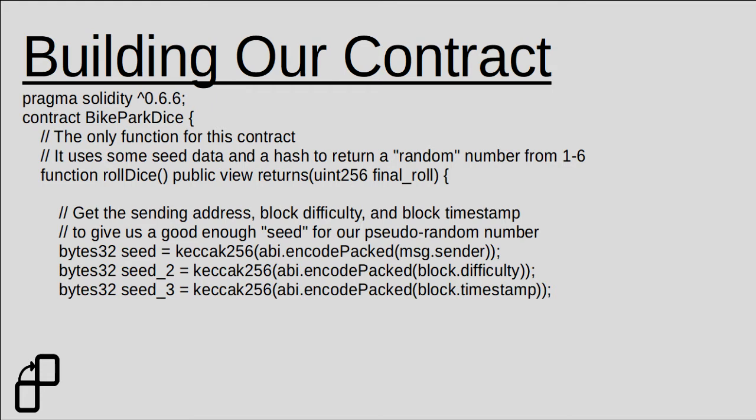So what we're going to do is create a pseudo-random number generator that's going to be good enough for our fun purpose by using some transaction data as a seed and a hashing function. Let's break down our couple lines of Ethereum smart contract code. First, we declare which Solidity compiler we want to use, and we declare a function called BikeParkDice. Now we're declaring a smart contract function called RollDice, and this is a public view function because it's simply a read-only function that outputs a number for us. It doesn't actually change any state on the Ethereum blockchain, so we can call it locally without having to use an event paradigm. This function returns a uint256, a 256-bit integer number, called FinalRoll.